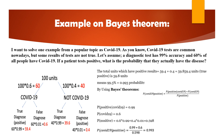Example on Bayes theorem: let's solve an example from the popular topic of COVID-19. COVID-19 tests are common nowadays, but some test results are not always true. Let's assume a diagnostic test has 99% accuracy and 60% of all people have COVID-19. If a patient tests positive, what is the probability that they actually have the disease?